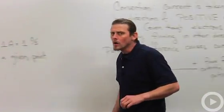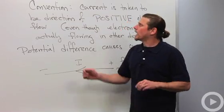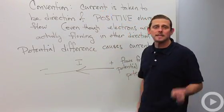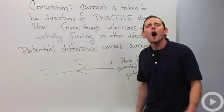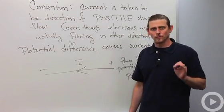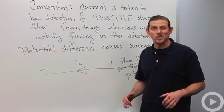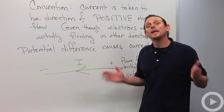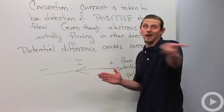All right there's a convention that essentially everybody uses for current and that is that current is taken to be in the direction of positive charge flow. Now we use this convention despite the fact that in almost every situation electrons are usually going the other way.